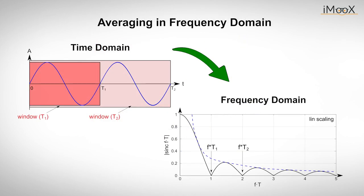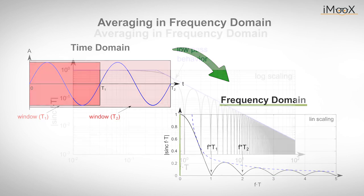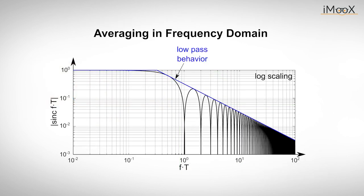If we want to know what the averaging process does with an arbitrary signal with different frequency components, we can also look at its attenuation in the frequency domain, where we can see the signal frequency on the x-axis and the attenuation of the signal on the y-axis. If we plot the same diagram with logarithmic scaling, you might see a similarity to something we have already seen in one of our last videos about analog filters.